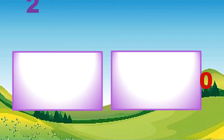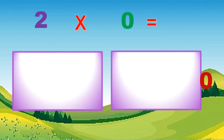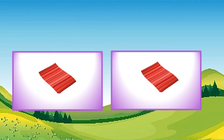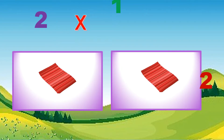Two sets of zero is zero. Two times zero equals zero. Two sets of one is two. Let's do the skip counting: one, two. Two times one equals two.